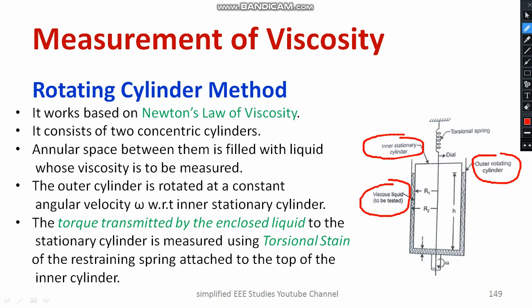The outer cylinder is connected with a shaft which rotates at an angular speed of omega. It is also connected with a torsional spring, as shown in the diagram, and there is a dial and pointer kept along with the spring. The overall device — the rotating cylinder method — works based on the principle of Newton's law of viscosity, which we discussed in the previous session. That means shear stress tau is directly proportional to mu (dynamic viscosity) and du/dy.